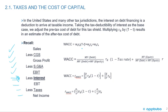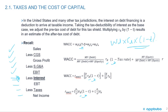Looking at the weighted average cost of capital formula, you can see taxes are only affecting the cost of debt component. It's the cost of debt times 1 minus the tax rate. So in the full WACC formula, it's the weight of debt times the cost of debt times 1 minus the tax rate. And that's the only slide for this LOS.